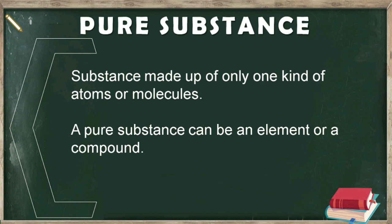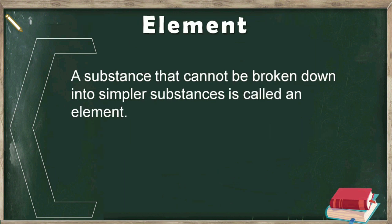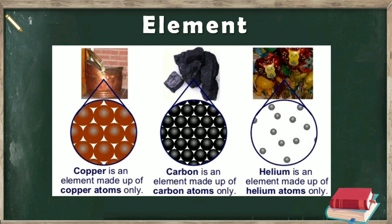A pure substance can be an element or a compound. Let us know about elements. Any substance like gold, carbon, helium, etc. that cannot be broken down into simpler substances is called an element. We can also say that an element is a substance made up of only one kind of atoms. For example, copper, carbon and helium are elements because we cannot break them into simpler substances. Copper is made up of only copper atoms, carbon is made up of only carbon atoms and helium is made up of only helium atoms.